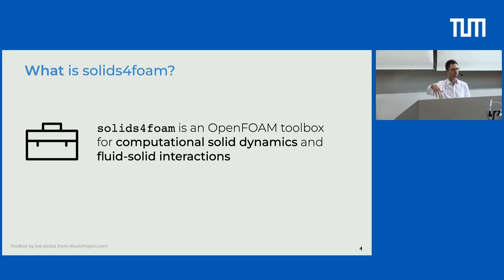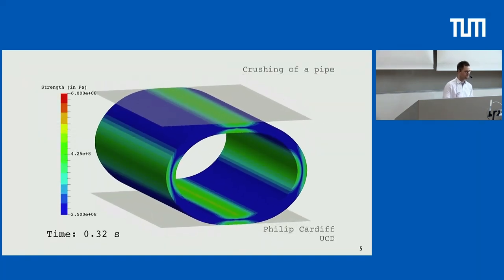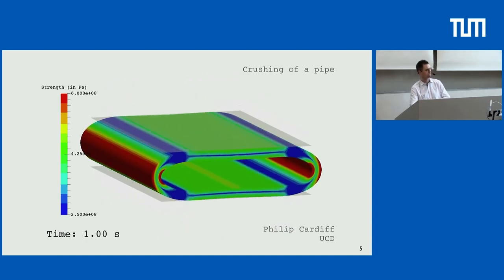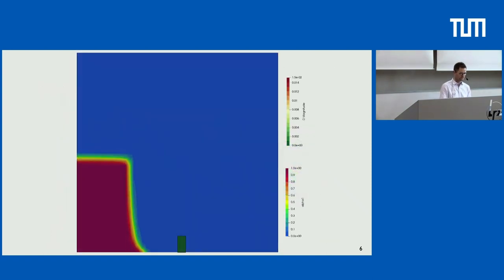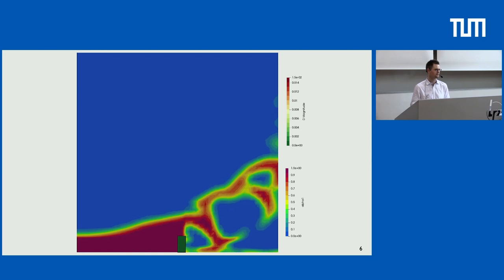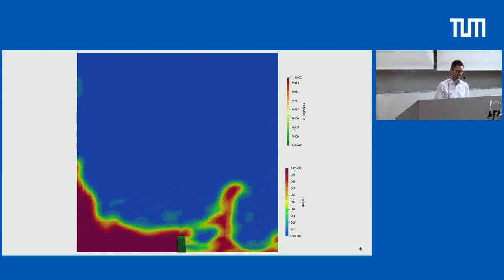Solids4foam is an OpenFOAM toolbox for computational solid mechanics and fluid-structure interactions — something that sits on top of OpenFOAM and adds extra functionality. Some of my research involves metal forming: large elastic-plastic deformations of ductile metals with frictional contact. One of the tutorials is this flexible dam break test case, which people use to benchmark in the literature. This uses InterFOAM from OpenFOAM and solids4foam, and I'd like to set this up with preCICE as well.